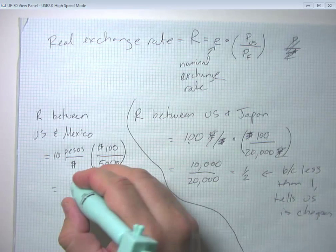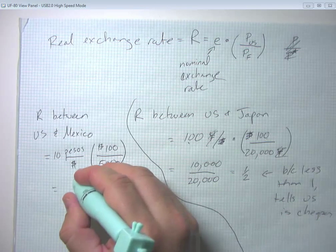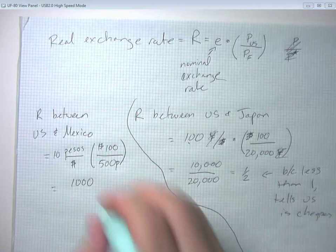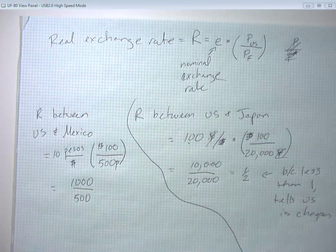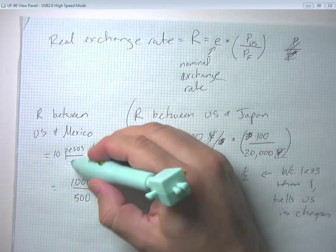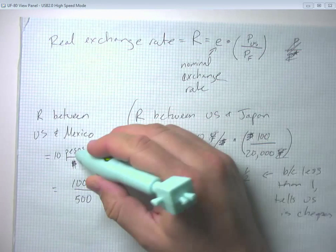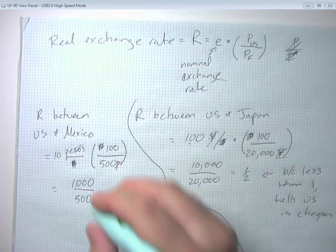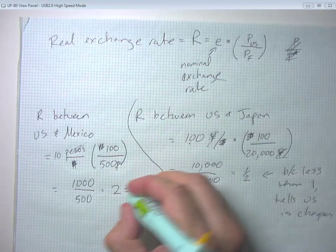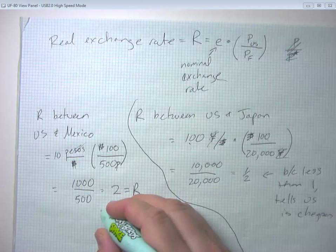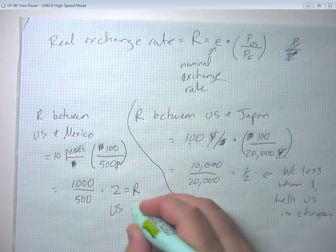And so we would get 1,000 on the top. 10 times 100 gives us 1,000. The dollar signs cancel out as do the pesos. We get 1,000 over 500 equals 2. Our real exchange rate is 2, which tells us the US is more expensive.